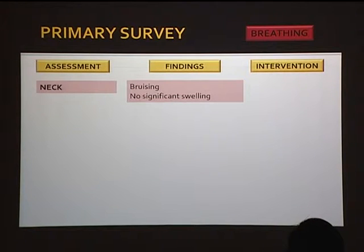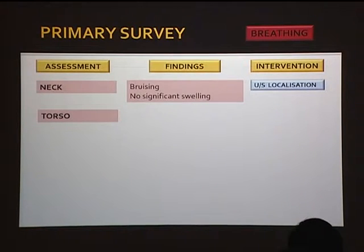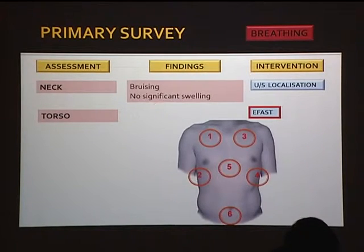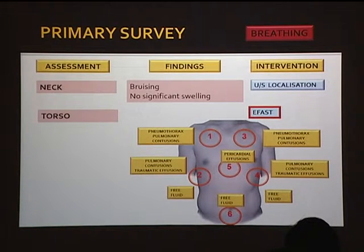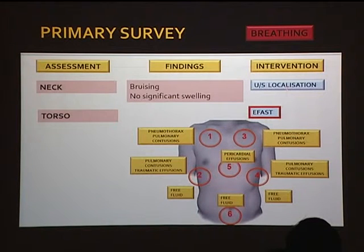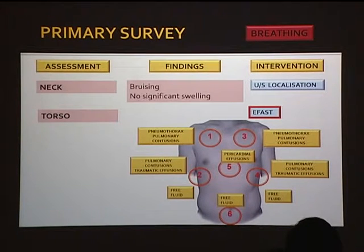This is where ultrasound comes in for the breathing assessment. You'll see bruising on the chest wall and significant swelling. Use ultrasound to localize the injury. The things marked in red are most important. If you don't think the neck swelling is causing an airway problem, quickly proceed to breathing — that's where your E-FAST comes in. In the lung assessment of E-FAST, you can look for pneumothorax and pulmonary contusion very quickly. In this primary survey, at this point you can almost entirely depend on ultrasound, and it will be much better than your stethoscope in trauma assessment.